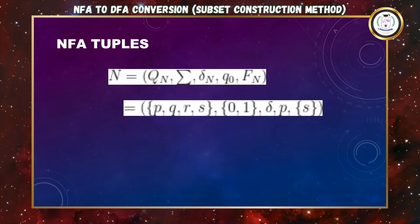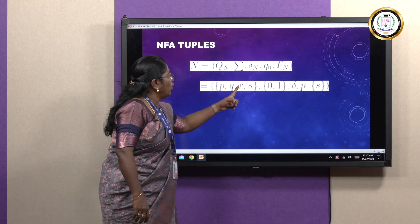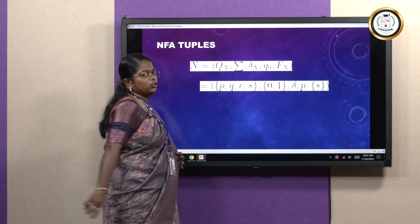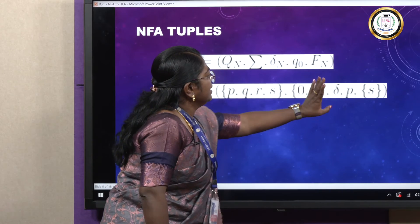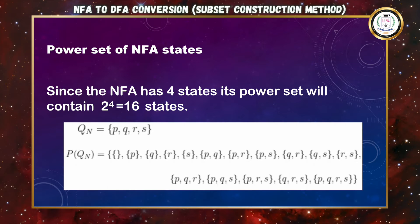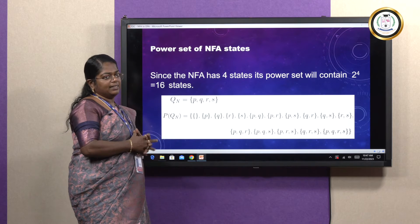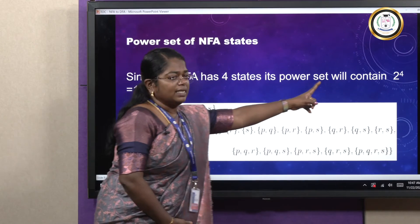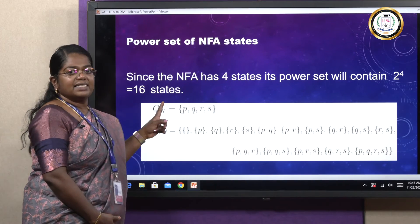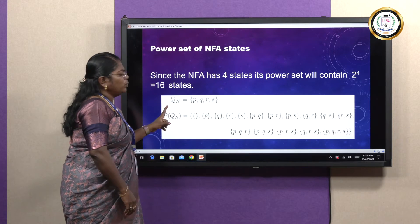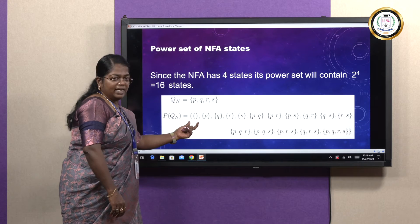These are the NFA tuples given to us. Q has 4 states: P, Q, R, and S. The set of input symbols is {0, 1}. The transition function defines how we move from one state to another. S is the final state and P is the initial state. Now, here is how we are going to construct the subsets. Since we have 4 states, the power set contains 2 to the power 4, which equals 16 states when constructing the subset.